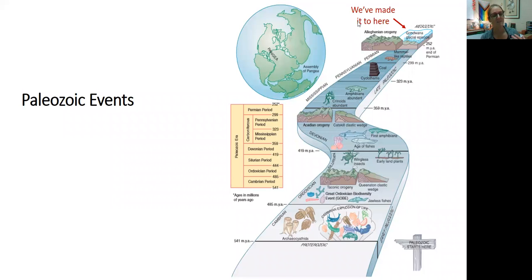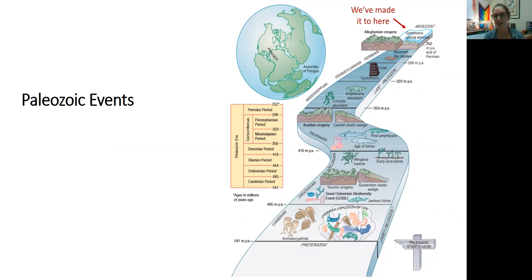Coming back to our timeline, we have made it all the way through the Paleozoic events. We've gone through the creation of the Appalachian Mountains on our east coast, the creation of the Cordilleran Mountains on our west coast, the creation of limestone in the center of our continent, and the creation of coal beds and cyclothems within our continent. Now we're moving all the way to the end of the Paleozoic and figuring out what deposits were formed then.